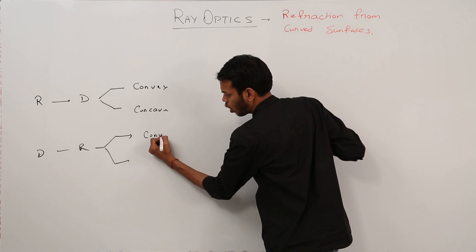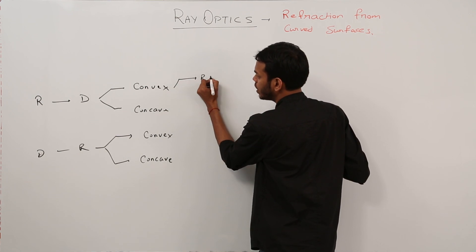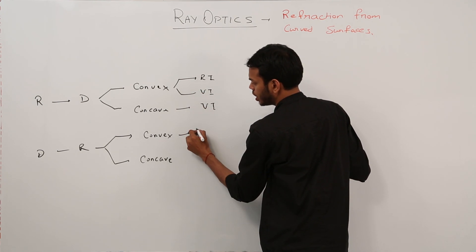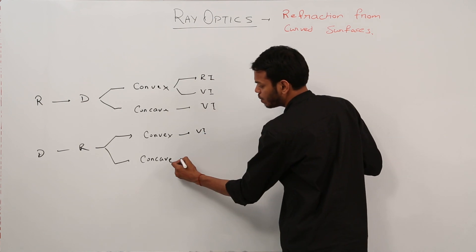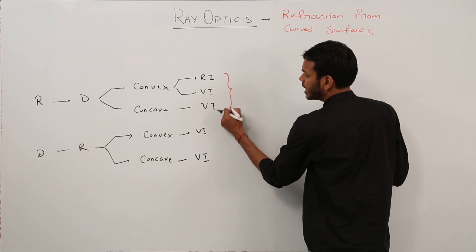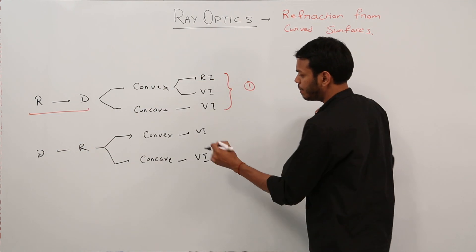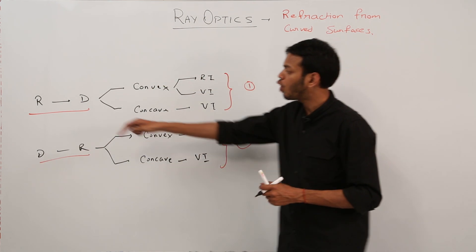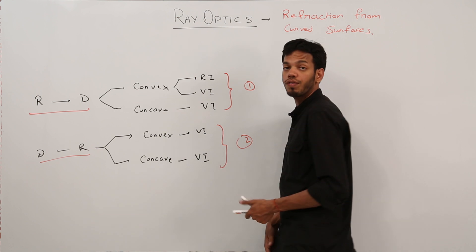For convex surfaces, it gives either a real image or a virtual image, and for concave it gives a virtual image. Convex can also give a real image depending on the position of the object, but in your syllabus books only the virtual image is mentioned. All these topics will have just one answer for rarer to denser medium, and similarly another answer for denser to rarer medium — two broad categorizations and two answers, irrespective of the five different types of derivations.